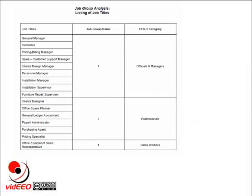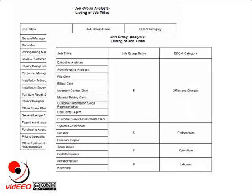The final step of the job group analysis is to prepare a table that shows where each job title falls with respect to job group and EEO-1 category. Within Job Group 1, the Officials and Managers category, we have: General Manager, Controller, Pricing Billing Manager, Sales Customer Support Manager, Interior Design Manager, Personnel Manager, Installation Manager, Installation Supervisor, and Furniture Repair Supervisor. Within Job Group 2, the Professionals category, we have: Interior Designer, Office Space Planner, General Ledger Accountant, Payroll Administrator, Purchasing Agent, and Pricing Specialist. We go through and categorize each of our job titles into a job group and an EEO category. Once we finish this, we're ready to move on to the Utilization Analysis.